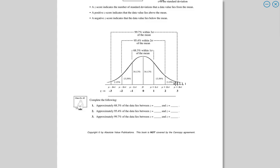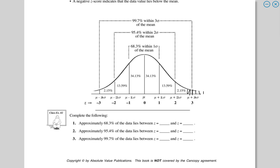Approximately 68% of the data lies between negative one and positive one standard deviation. Approximately 95% is between negative two and positive two. And pretty much all the data — 99% — is between negative three and positive three. If you're three standard deviations off, you're quite far from the average.